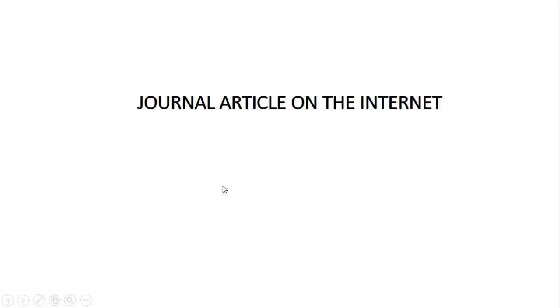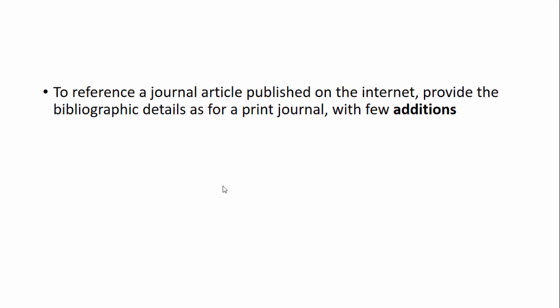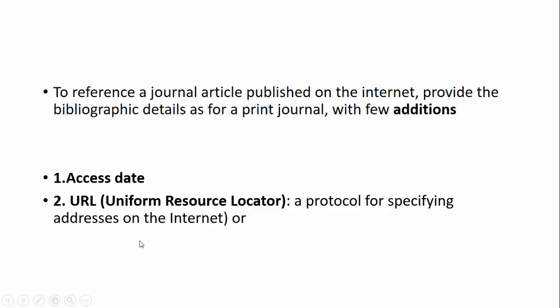Now, how do you cite an article which is published on the internet? When I say published on the internet, it is only an online journal and not a print journal. To reference a journal article published on the internet, provide the bibliographic details as for a print journal, but with a few additions. These additions are: one, you have to write the date of access, and two, you have to know the URL — which is the Uniform Resource Locator, a protocol for specifying addresses on the internet — or you need to know the DOI, which is the Digital Object Identifier. This DOI is a type of persistent identifier used to uniquely identify objects, particularly electronic documents such as journal articles. It started in the year 2000, and the details or the DOI will be available on the web page itself.